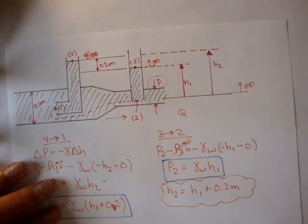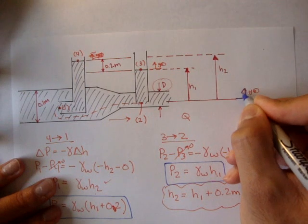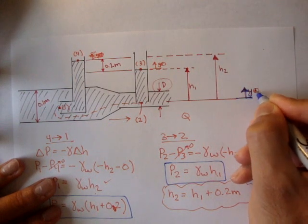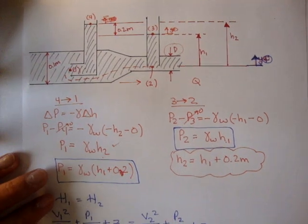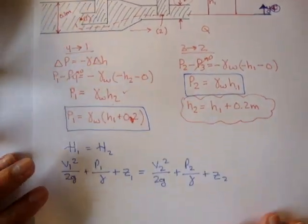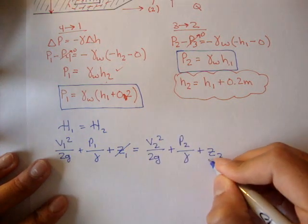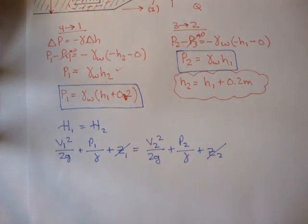And let's put our datum here originally. And if that's true, that means the height of two is equal to the height of one. So this and this cancel out.